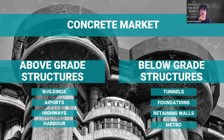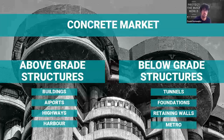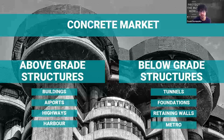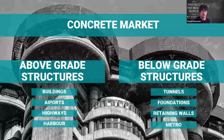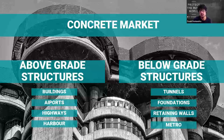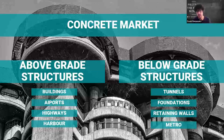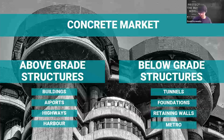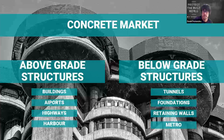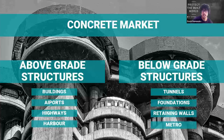We have above-grade structures — buildings, airports, highways, harbors, any kind of civil infrastructure above grade level. Then we have below-grade structures, such as tunnels, foundations, retaining walls, metro, and subway. You can imagine there are a lot of different types.